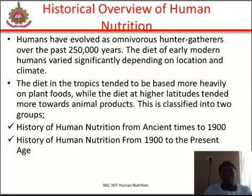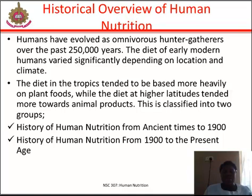Moving to the historical overview of human nutrition: humans have evolved as omnivorous hunter-gatherers over the past 250,000 years. The diets of early modern humans varied significantly depending on location and climate. Diets in the tropics tended to be based more heavily on plant foods, while diets at higher latitudes tended more towards animal products. Analysis of post-cranial and cranium remains from the Neolithic has shown that cannibalism was also prevalent among prehistoric humans.